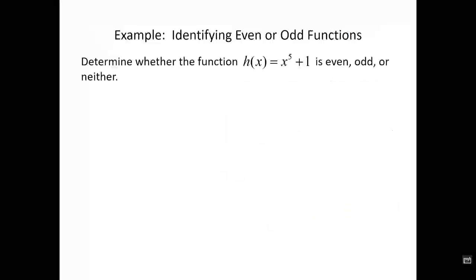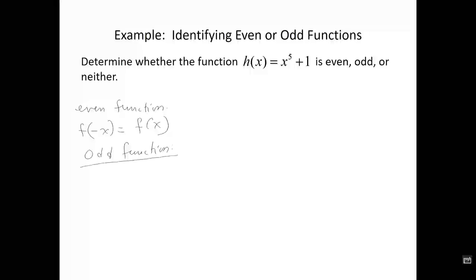In the next example, we want to determine if the function h(x) = x⁵ + 1 is even, odd, or neither. To make a determination, we recall that an even function satisfies f(-x) = f(x), and an odd function satisfies f(-x) = -f(x).